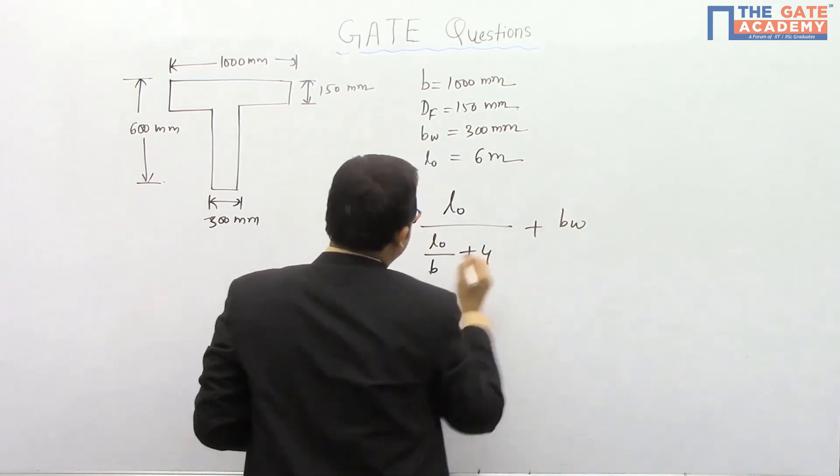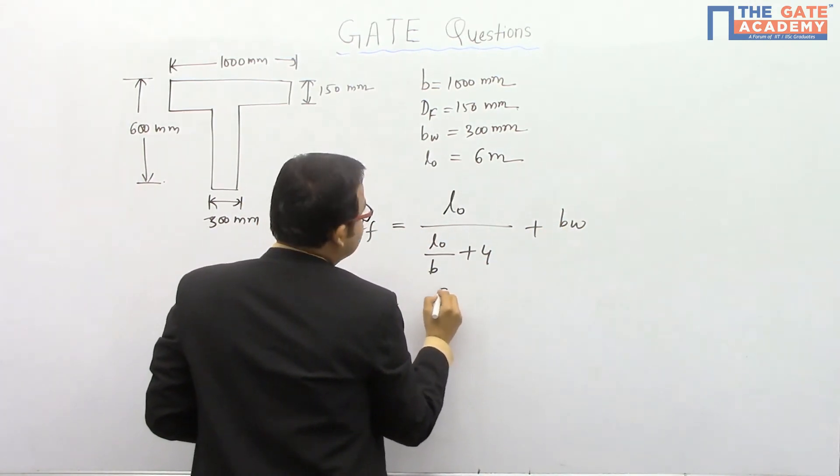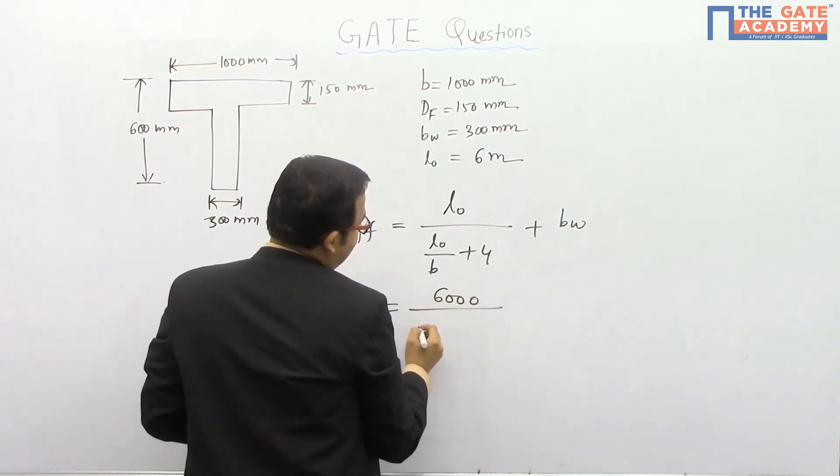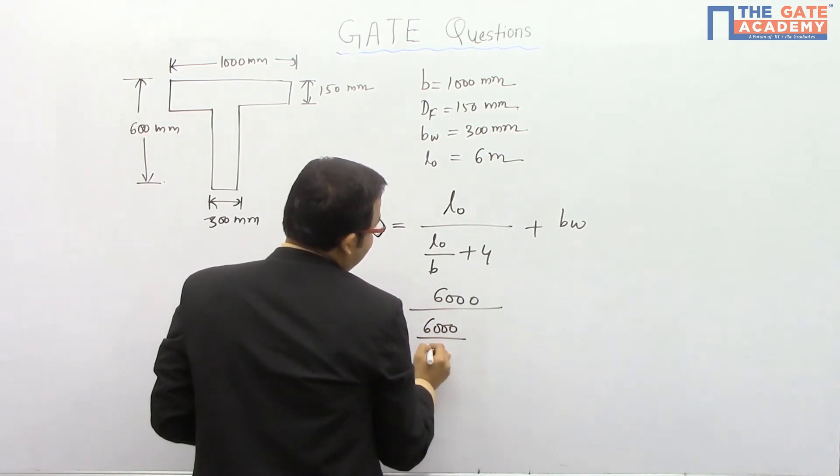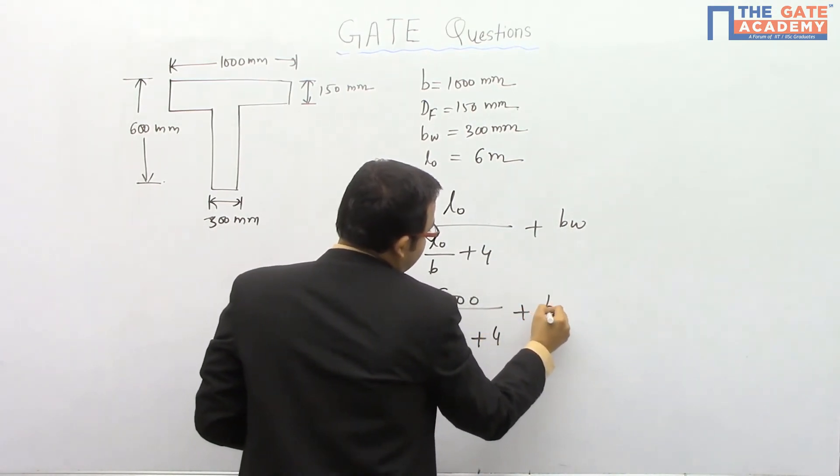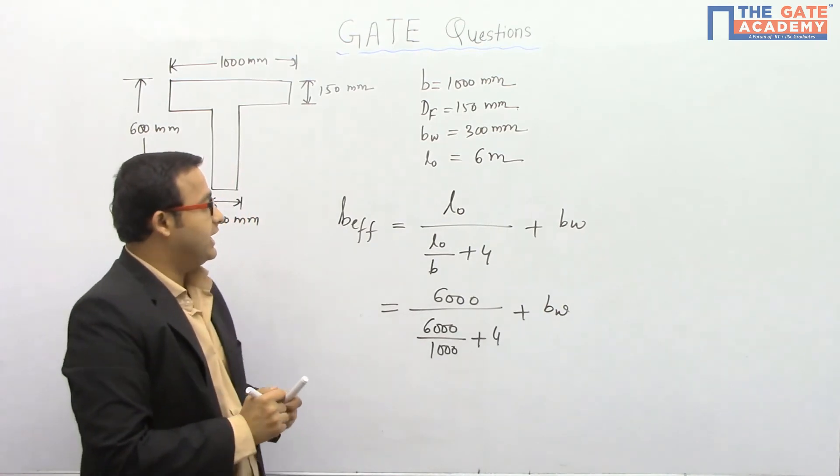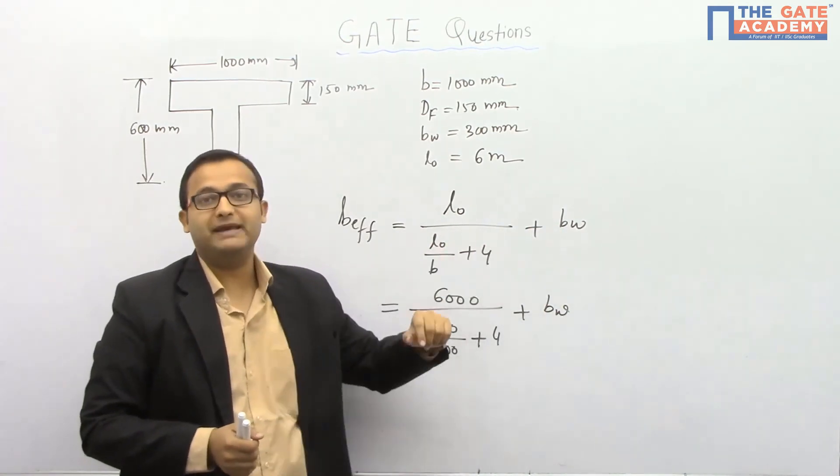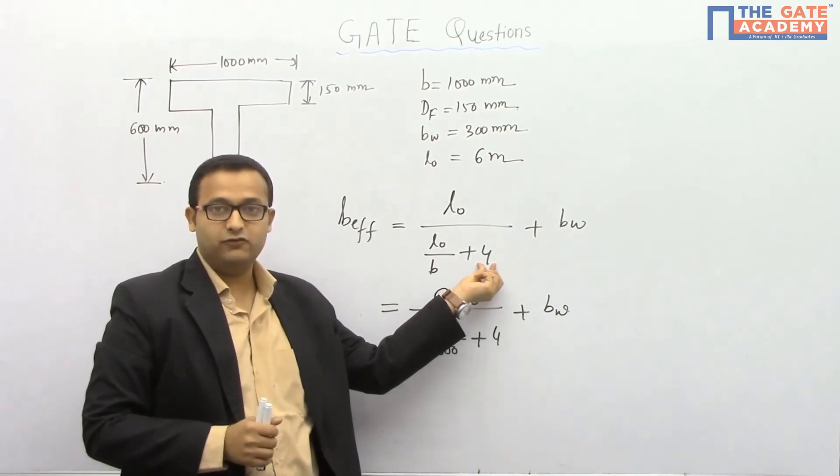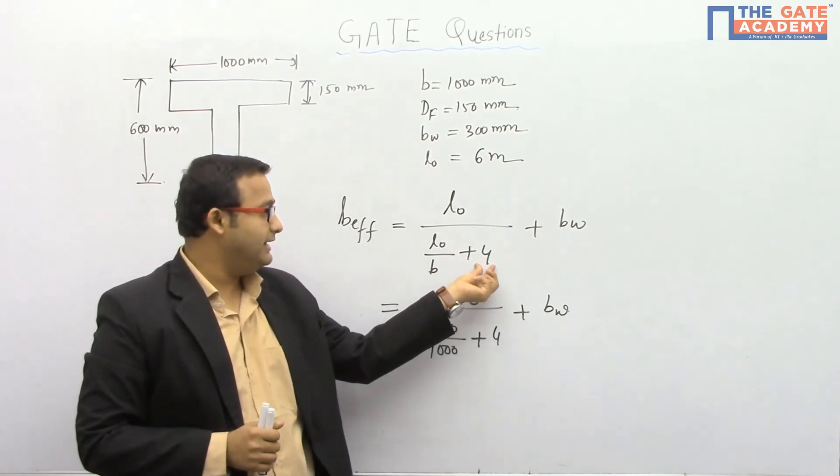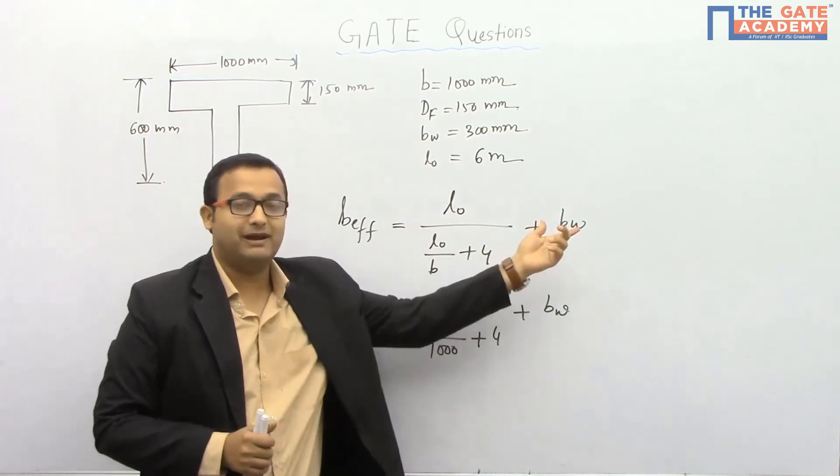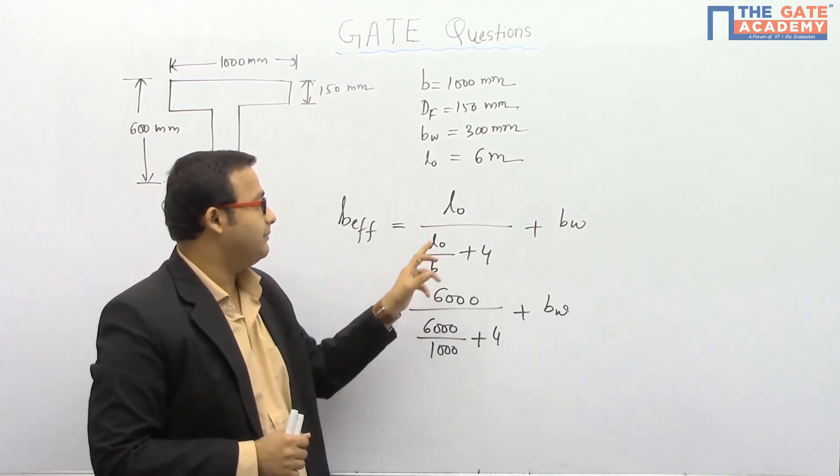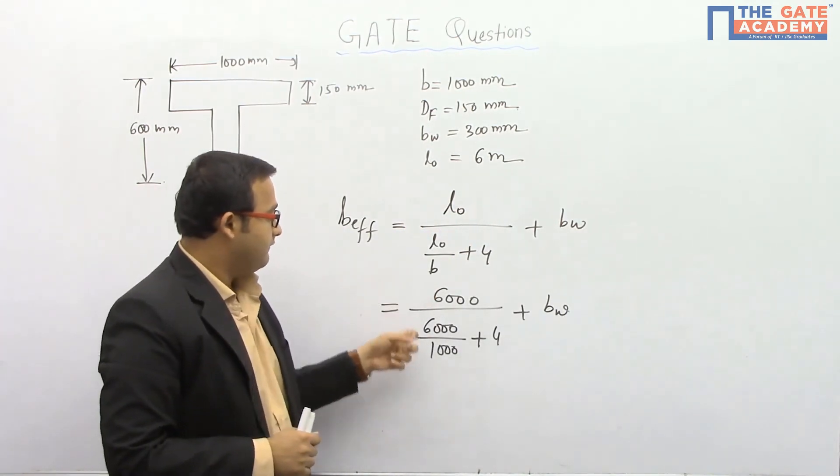So here you can see L0 is given 6 meters, means 6000 mm, divided by 6000 mm divided by B which is given 1000 mm, plus 4, plus BW. You should notice all the values here of B, L0, and BW should be kept in mm. Why? Because we have considered this value 4 here, which is constant and was determined when they took the value of all these other parameters in mm. If you put the values here in meters, the answer will not be correct. So we should take the values in mm.